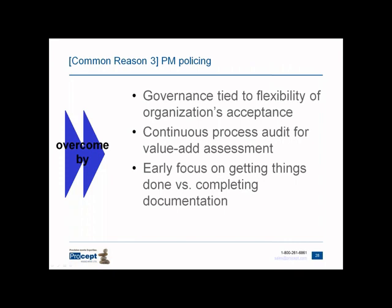The third most common reason is the policing perception — where people think PMOs only exist to come with a stick if things go wrong. When starting off, governance is important, but focus on getting things done instead of completing documentation. The PMO exists to make sure things get done in the right way, but start by getting things done, then getting things done consistently, then getting things done consistently and efficiently. Crawl, walk, run — that is how to target these common reasons why PMOs fail.